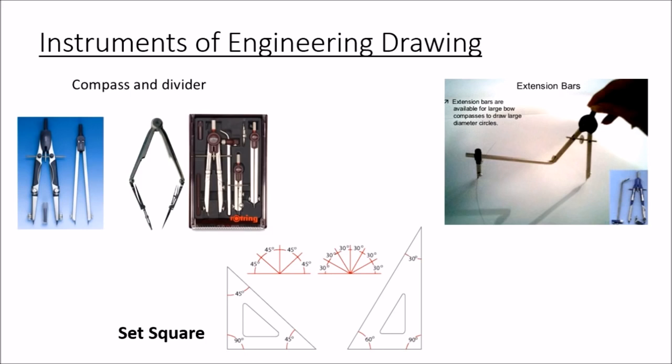The protector is for making the angles whereas set square is to draw parallel and perpendicular lines which are inclining over an angle of 45 degree, 30 degree or 60 degree. Here is a thing to note down that scale is not a part of instrument box, it is replaced by T square.